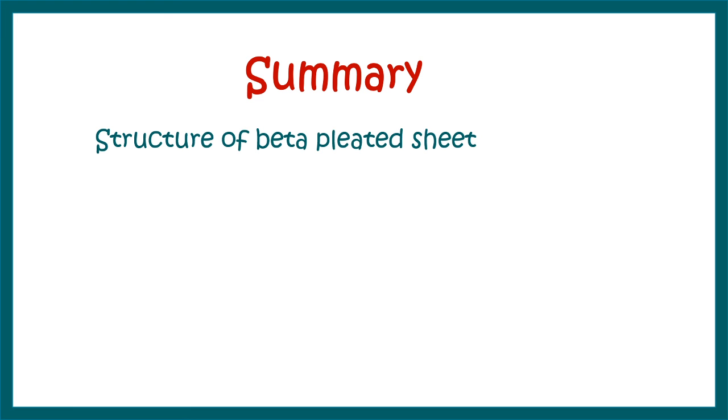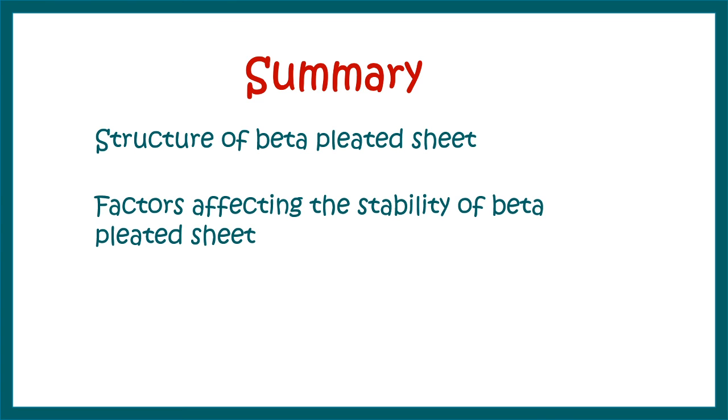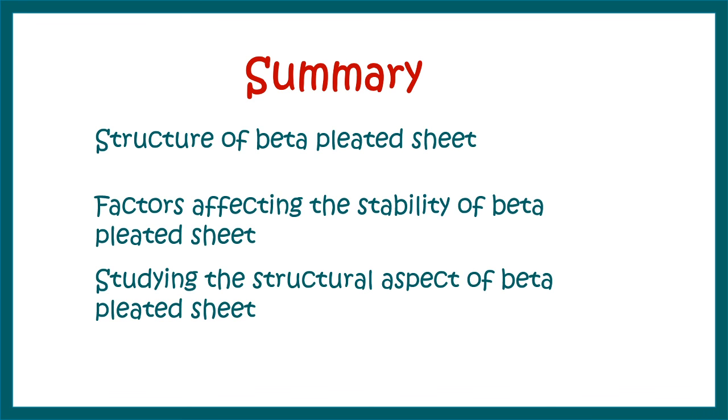Just to summarize what we have learned so far: we learned about the structural features of beta pleated sheet, how they are oriented in 3D space, the dihedral angles and where they fall in the Ramachandran plot. We also looked at the factors that can govern the stereo specificity or stability of beta pleated sheet. Lastly, we also learned the possible ways by which we can take a look at the structural features of beta pleated sheet. If you like this video, give it a quick thumbs up. Don't forget to like, share, and subscribe. Thanks for listening, see you next time.